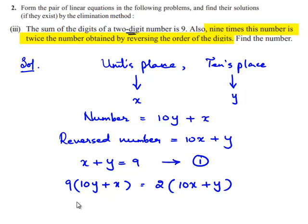So, 9 times 10y is 90y plus 9x is equal to 2 times 10x is 20x plus 2y. On rearranging the terms,